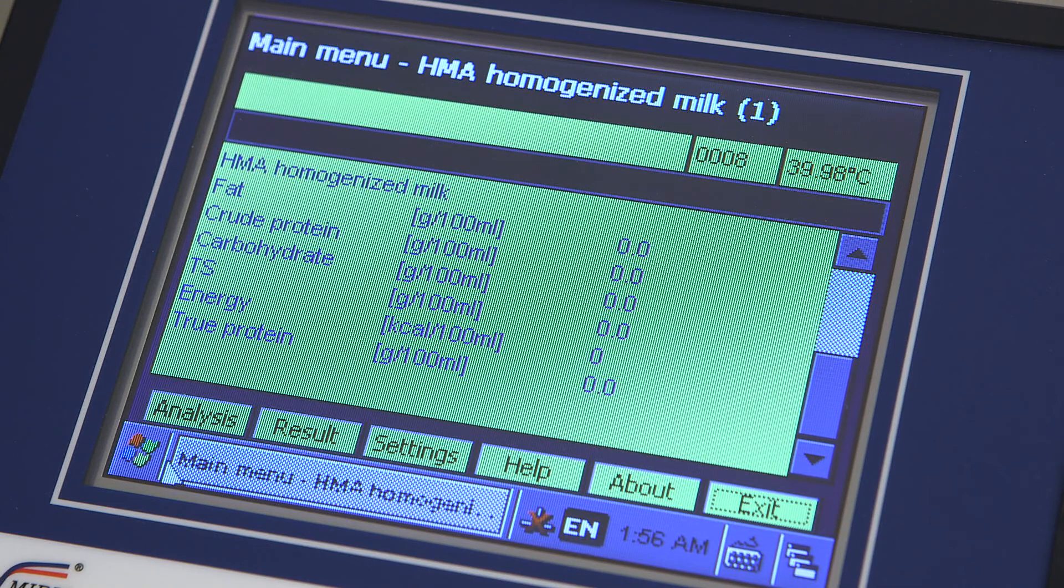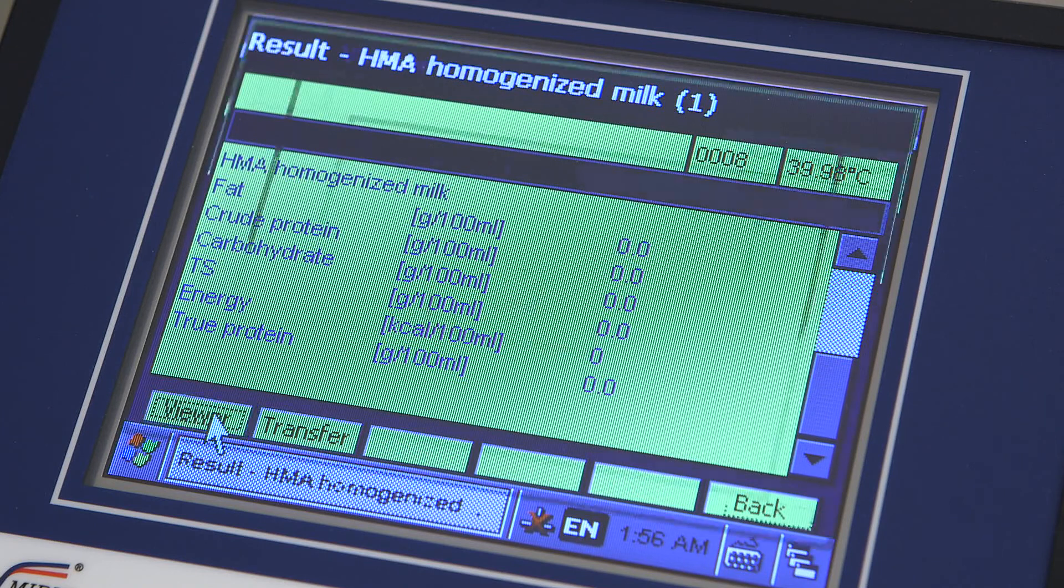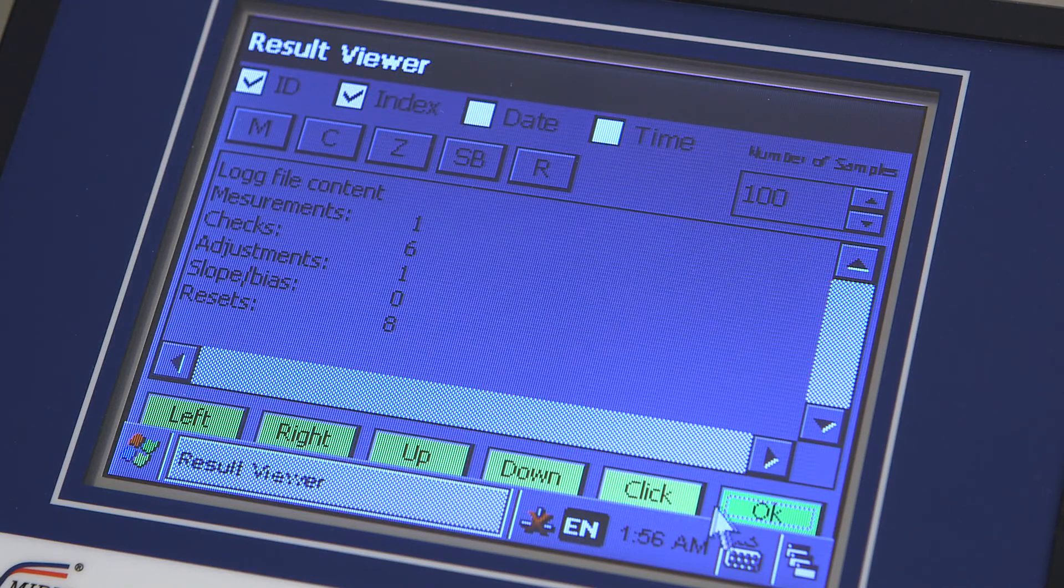Previous results can be simply viewed on screen by selecting Result on the menu bar and then Viewer. To exit the menu, press OK.